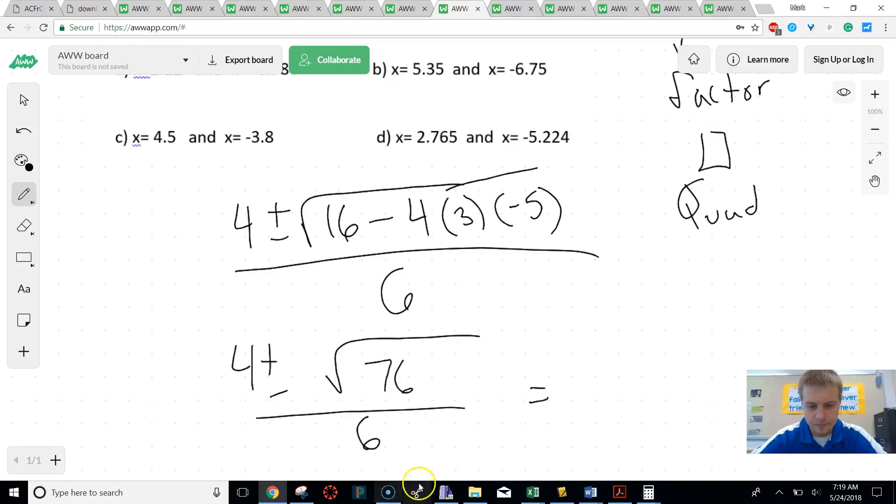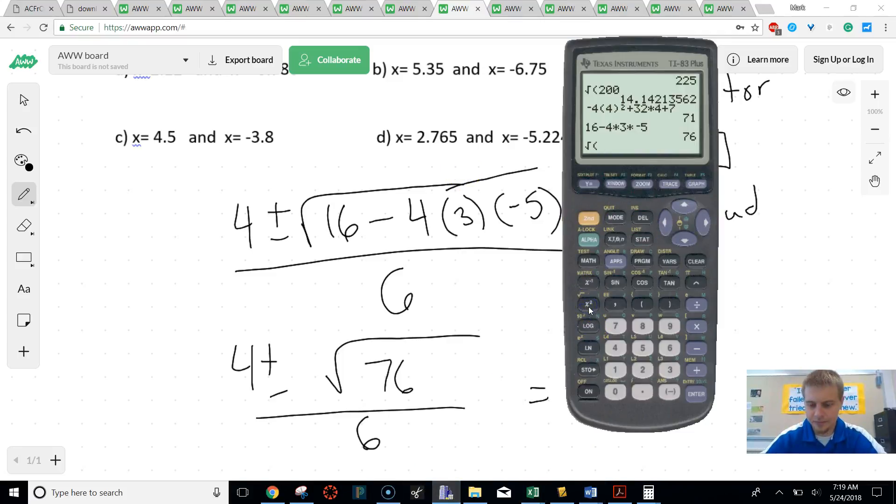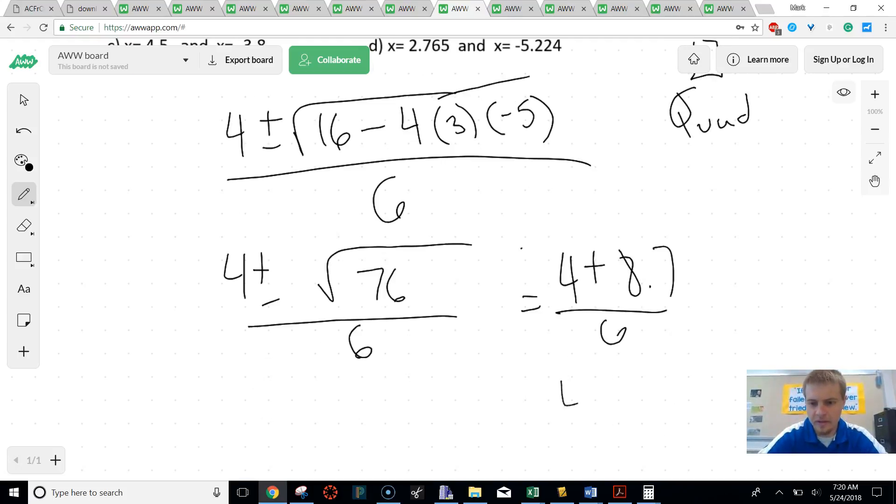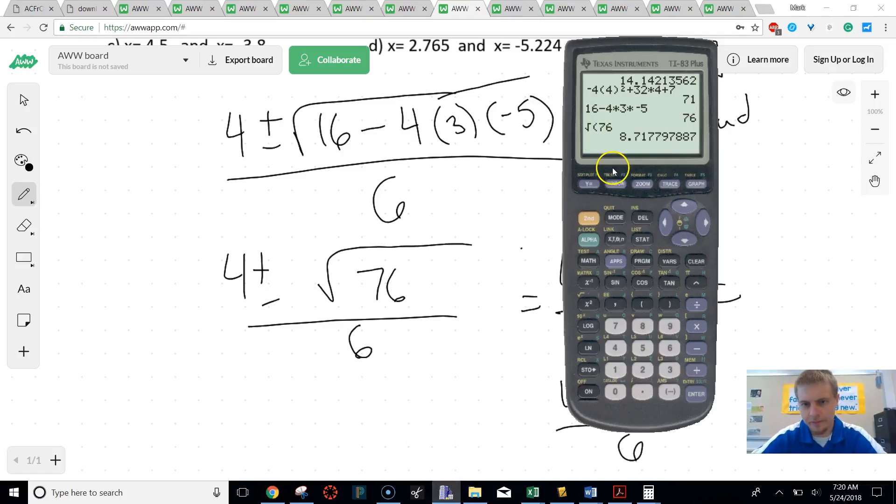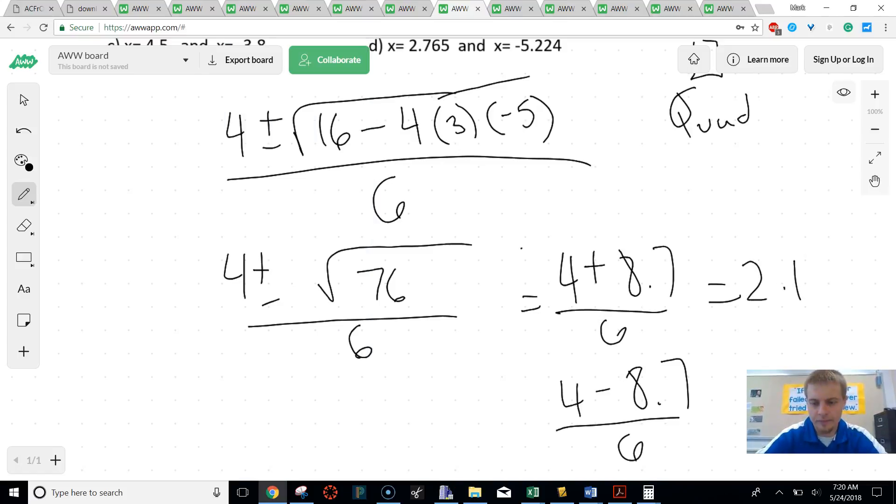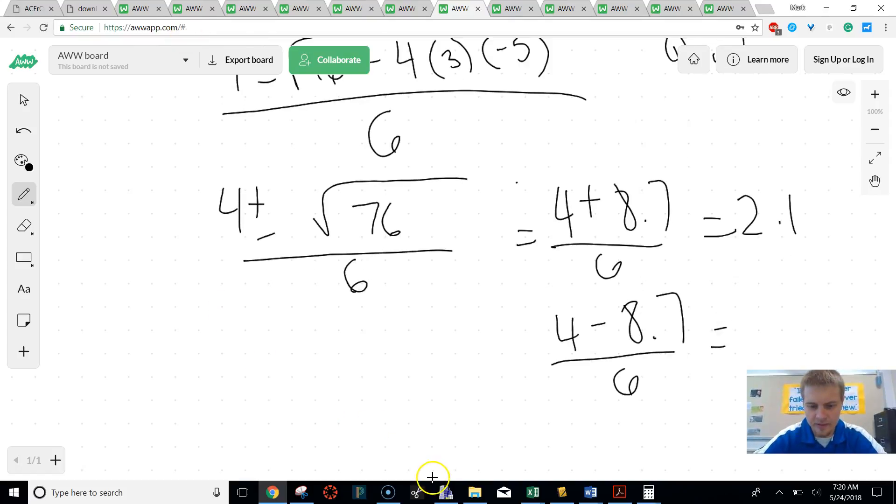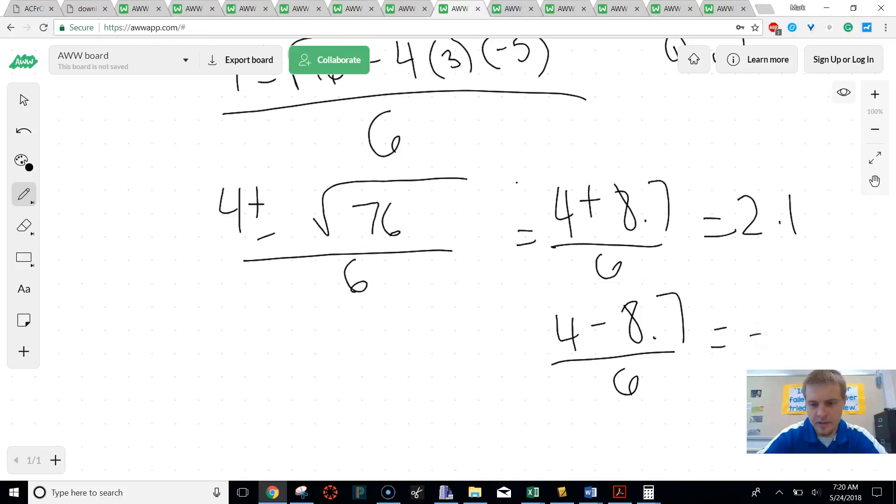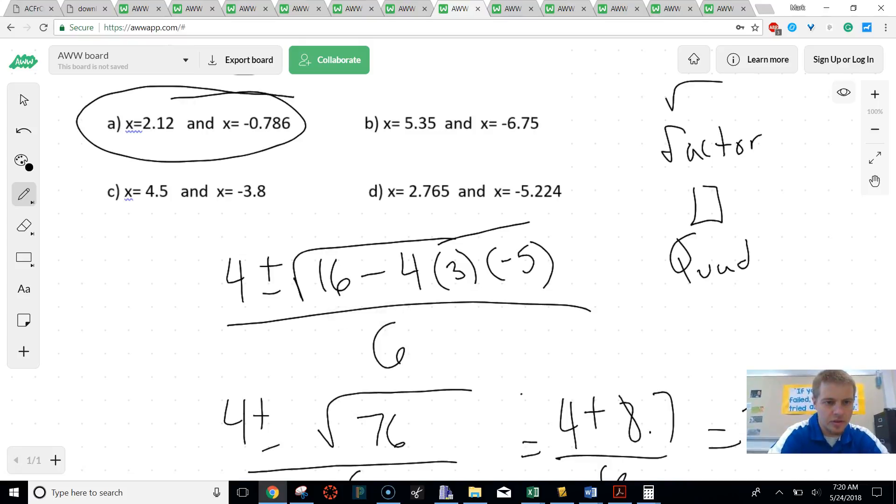And now from there, we're going to take that square root of 76, which is going to give me 8.7. So we're going to get 4 plus 8.7 over 6, and 4 minus 8.7 over 6. This one, if I do that, we do 4 plus 8.7, and then divide that by 6. That gives me 2.1. And now we'll do the minus side. So I'm going to do 4 minus 8.7 divided by 6, which is going to give me negative 0.78, which that is very, very close to A. So A is our answer.